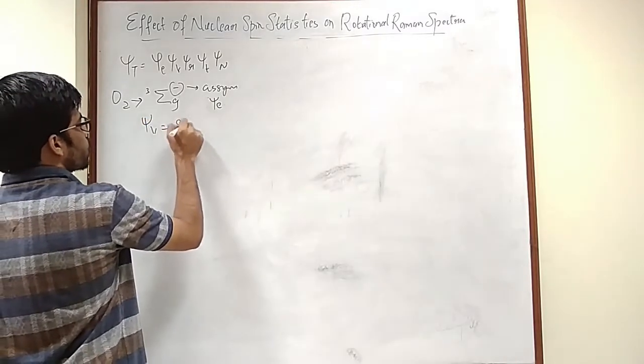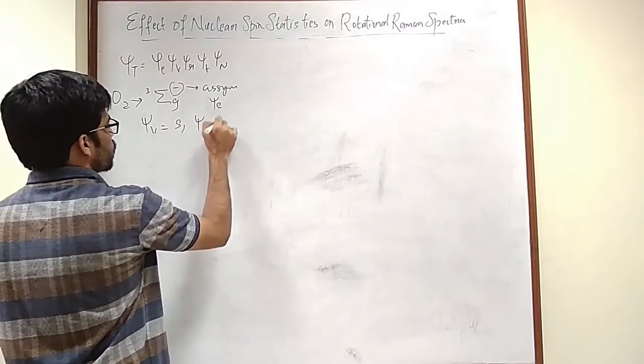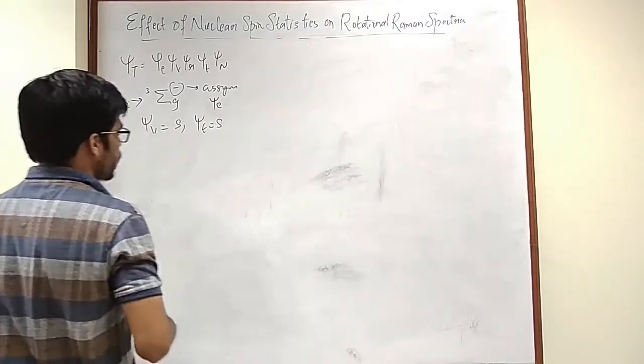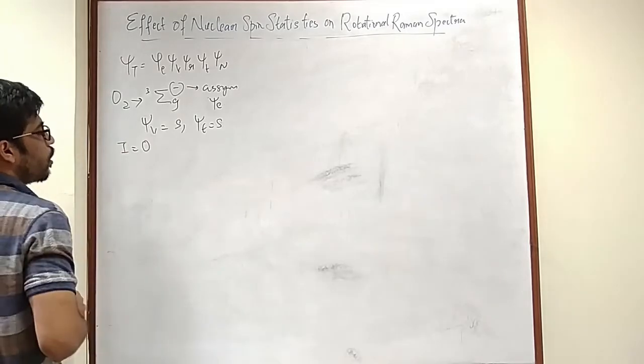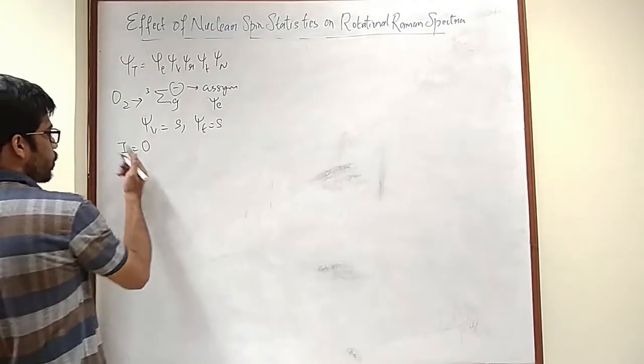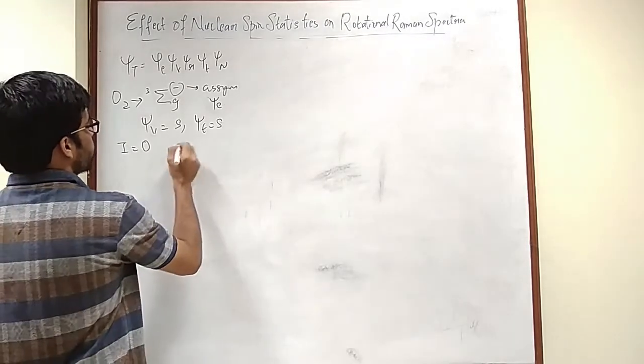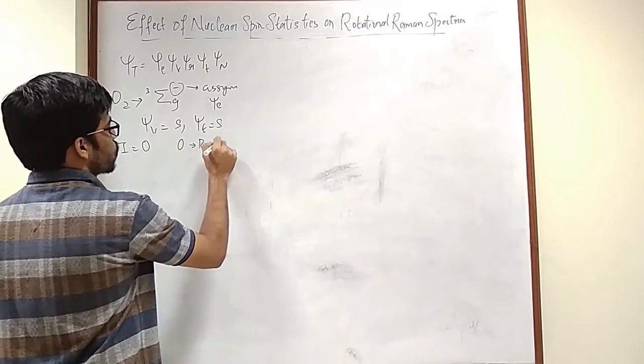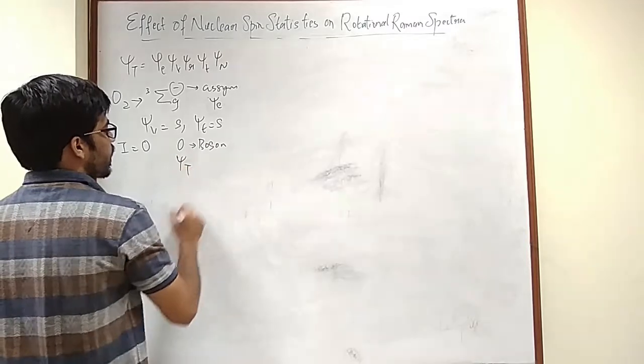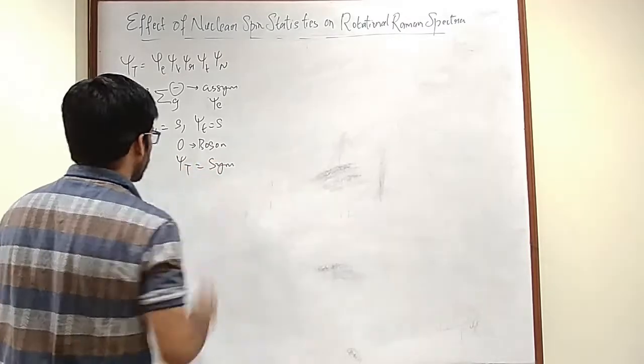Vibrational wave function is always symmetric, translation wave function is always symmetric, so you need not worry about that. Now the nuclear spin is zero and oxygen by default is a boson. So that would mean psi total has to be symmetric, right.